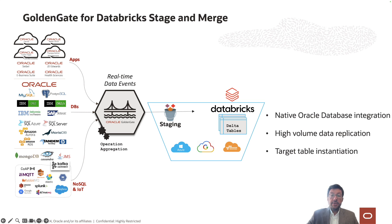First of all, GoldenGate's native integration with Oracle database using the GoldenGate API provides the highest performance and reliability when it comes to change data capture from Oracle databases. Remember, most of the time your target ingestion is only as good as your change data capture capacity.